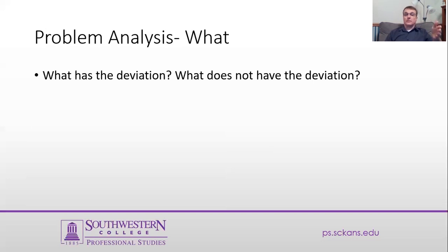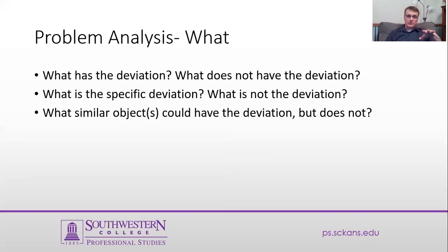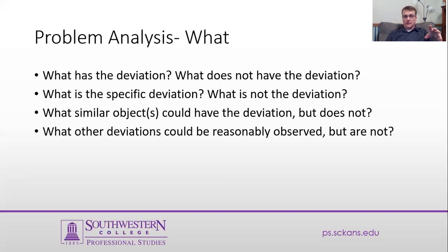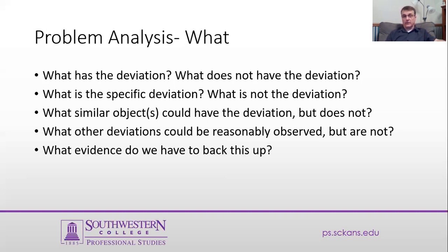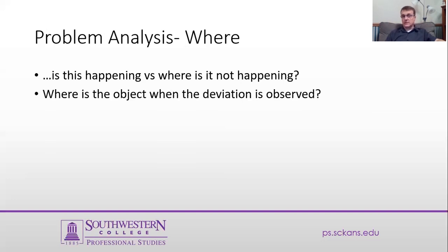Problem analysis starts with 'what.' What has the deviation? What does not have the deviation? What is the specific deviation? What is not the deviation? What similar objects could have the deviation but do not? What other deviations could be reasonably observed but are not? And what evidence do you have to back all of that up? Where is the deviation on the object? Maybe it's on the bottom right-hand corner, meaning the rest of the object does not have this deviation.